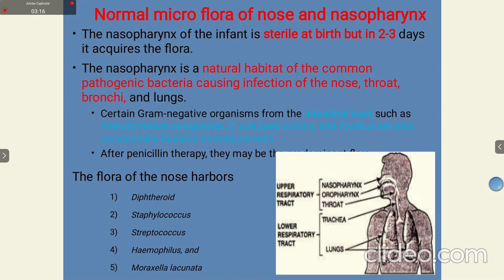Regarding the normal microflora of the nose and nasopharynx: the nose is in direct contact with the environment. The nasopharynx of an infant is completely sterile at birth, but after two to three days it acquires flora from the air. The nasopharynx is the natural habitat of common pathogenic bacteria causing infections of the nose, throat, bronchi, and lungs. Gram-positive organisms from the intestinal tract may also occasionally come up. Pseudomonas aeruginosa, E. coli, Paracolon, and Proteus species are occasionally found in normal persons.